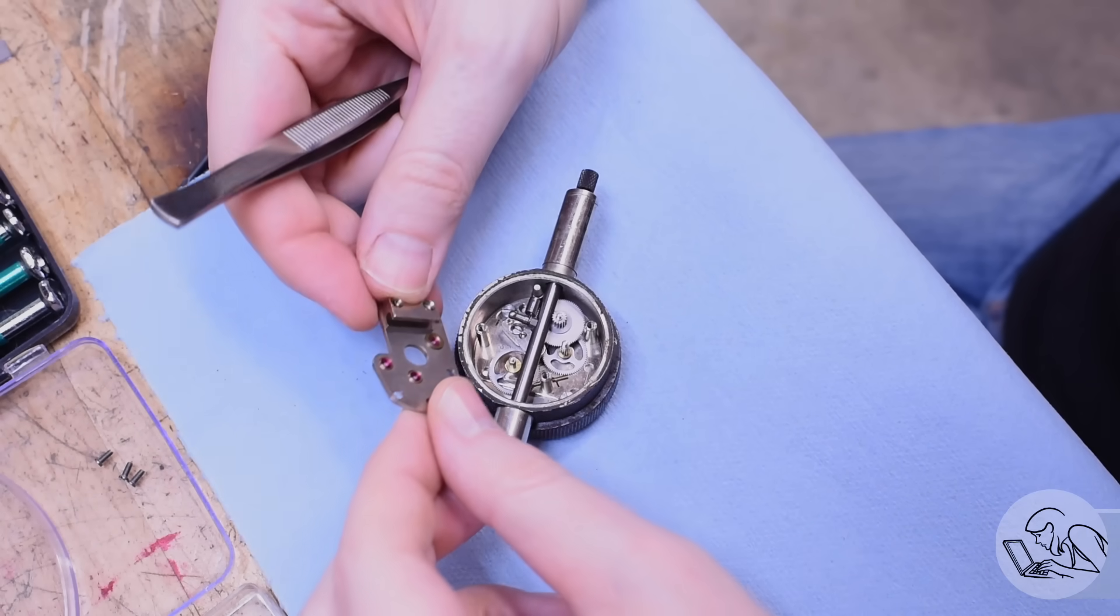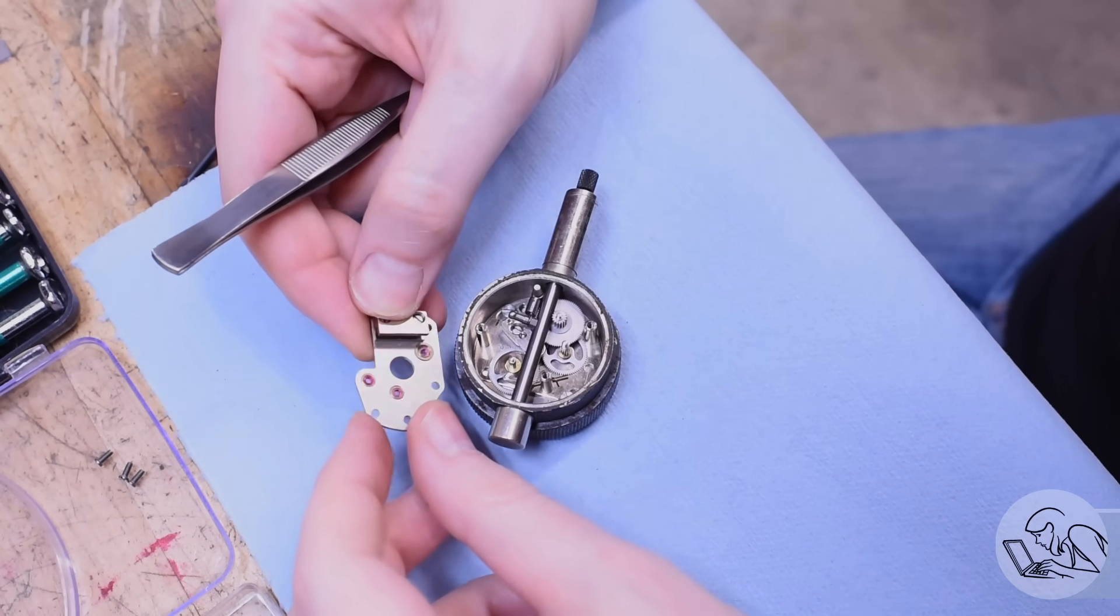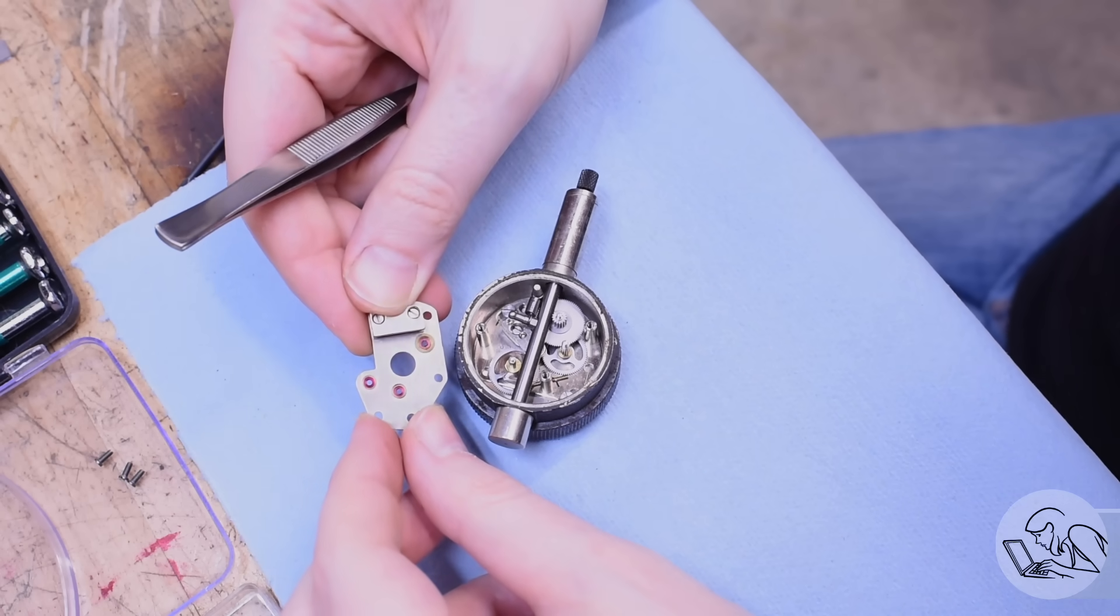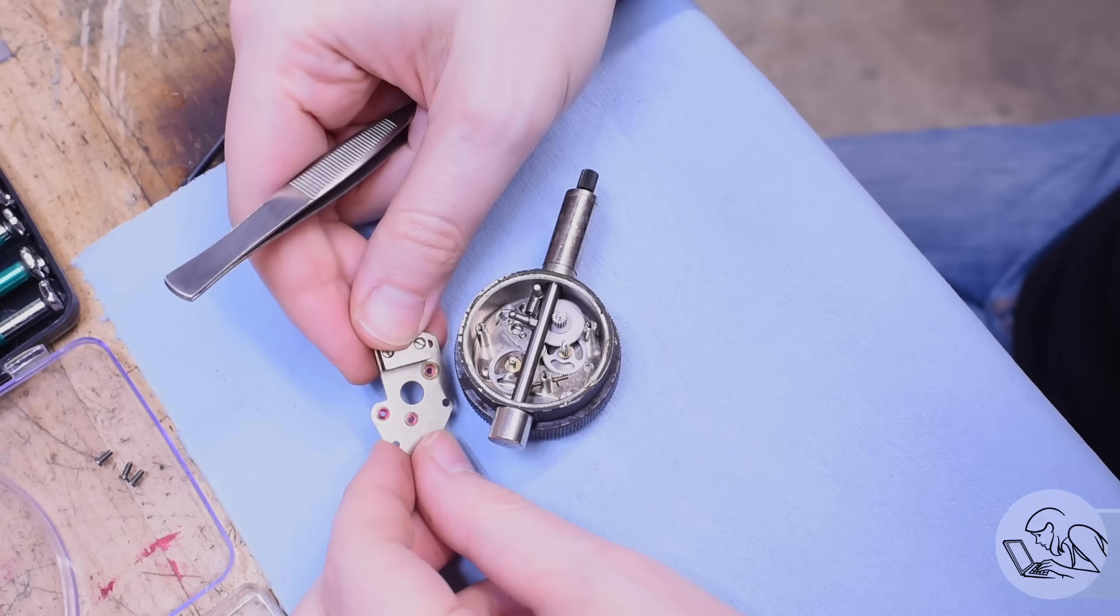When I flip this over, now it really looks like a watch, because you can see that those bearings are, in fact, little pieces of ruby. And in fact, they're properly called jewels, I believe, not bearings in the watchmaker trade. But bearings is what they are.